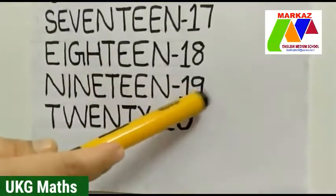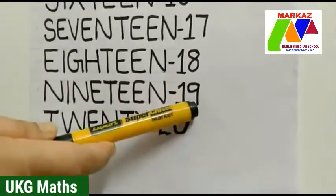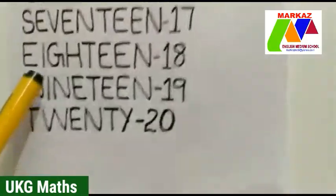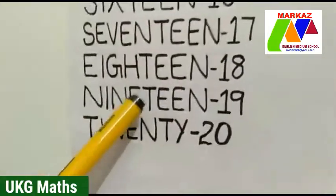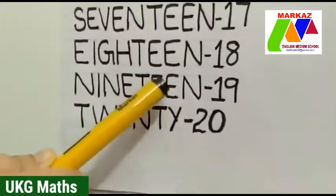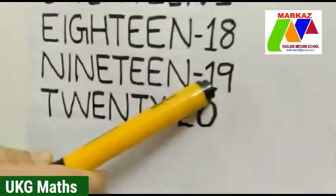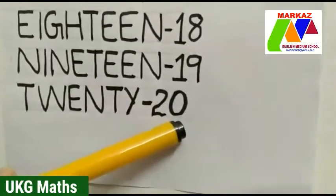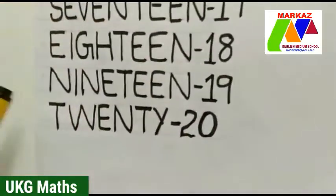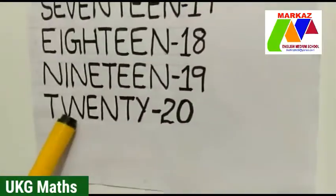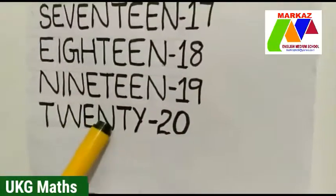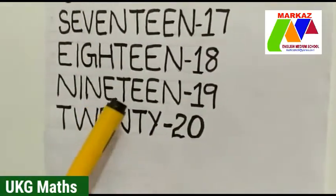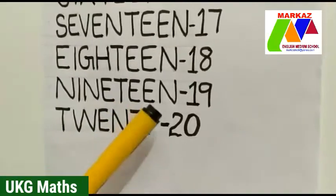Children, which number is this? Yes, this is number 19. What is the spelling of 19? N-I-N-E-T-E-E-N, 19. Next number — last number. Which number is this? Yes, very good, 20. What is the spelling of 20? T-W-E-N-T-Y, 20.